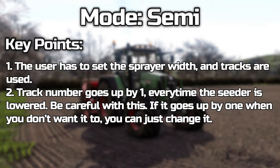The second mode is the semi mode. This is when the user has slight control over it but it isn't fully automated. You will put the sprayer width in, you'll have the track numbers, and every time the seeder is lowered, that track number is incremented by one. So if the track was set to one and you lower the seeder, the track number turns over to track number two. This is useful for when you're doing your up and downs after your headlands and you haven't got GPS — or even if you have GPS, but if you do have GPS I'd recommend the next mode, which is automatic.